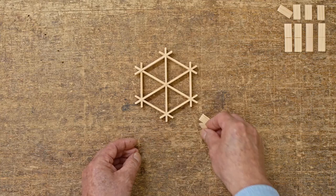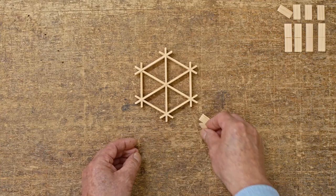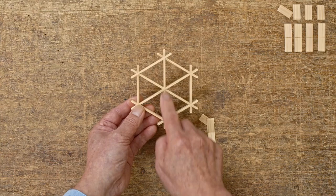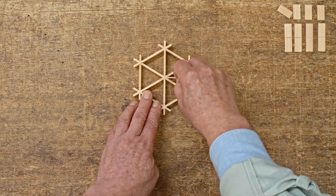When assembling the hexagonal base frame, there were two pieces with grooves on only one side and one with grooves on both sides. The piece with grooves on both sides is placed vertically for assembling these pieces.